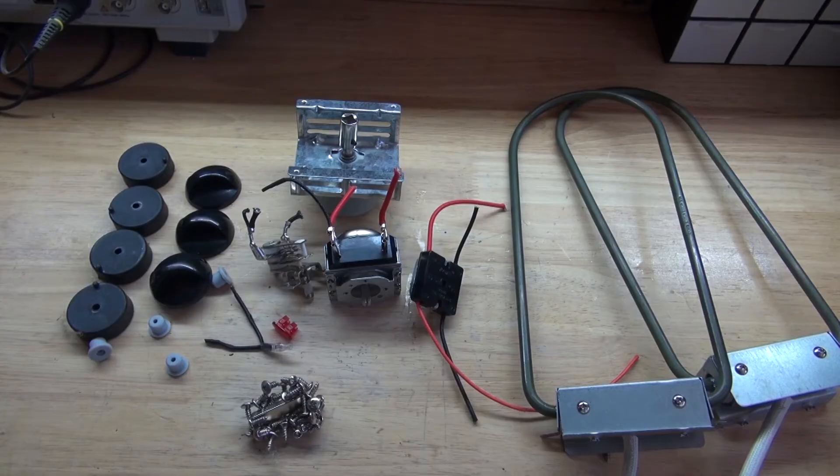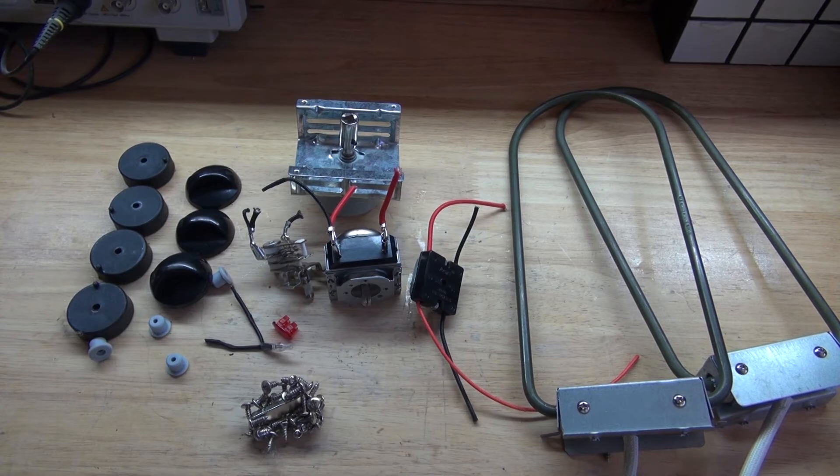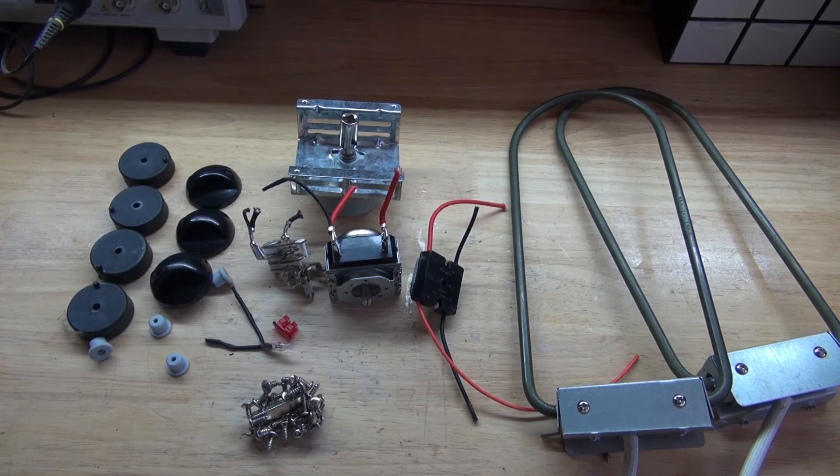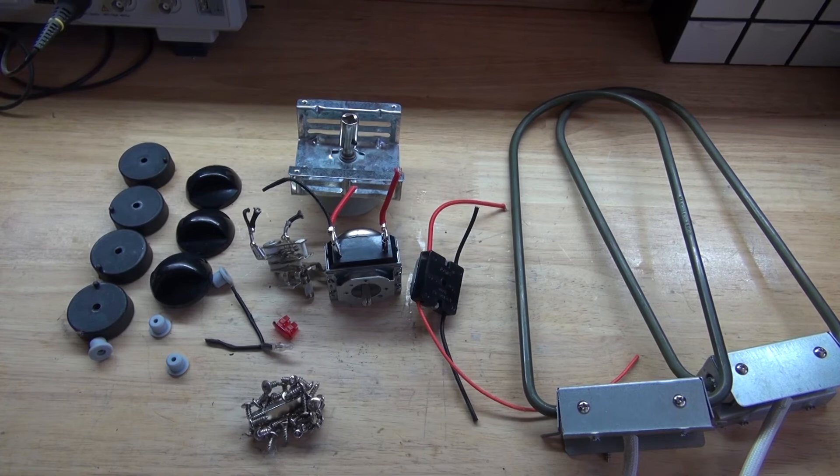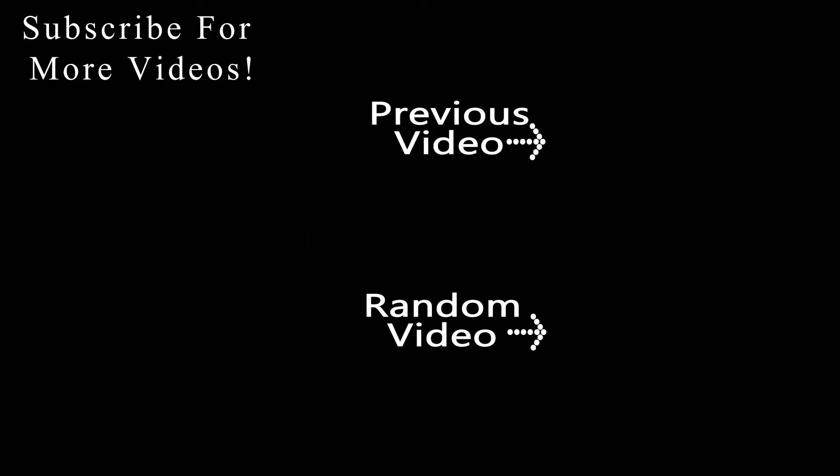And there you have it. Now you know what's inside of a chicken rotisserie oven, you know how it works, and what kind of components are worth salvaging. Thank you for watching SciTaiTech. I hope you learned something new, and don't forget to like, share, and subscribe, and of course click on the bell icon to be notified of future SciTaiTech videos. Till the next tech, goodbye!